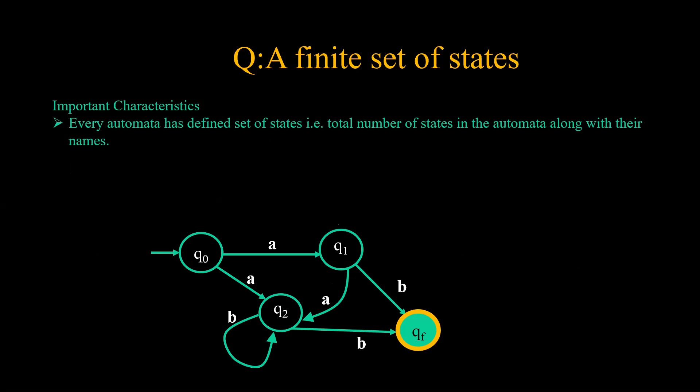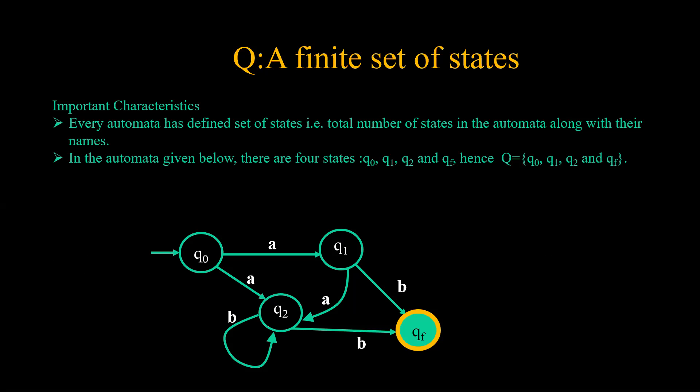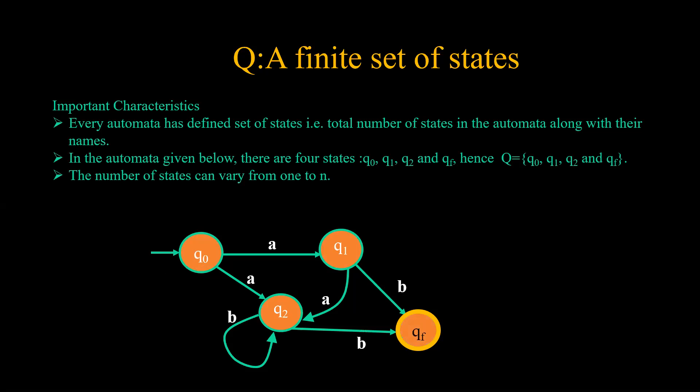First comes Q, a finite set of states. Every automata has a defined set of states — that is, the total number of states in the automata along with their names. In the automata given below, we have four states: Q0, Q1, Q2, and QF. Hence capital Q is {Q0, Q1, Q2, QF}. Number of states can vary from 0 to n.